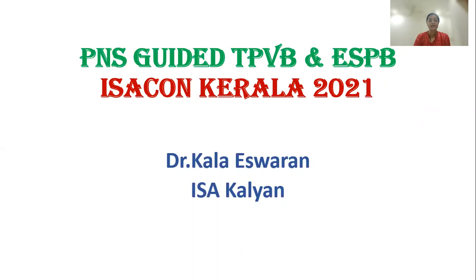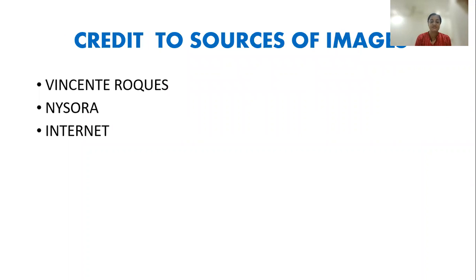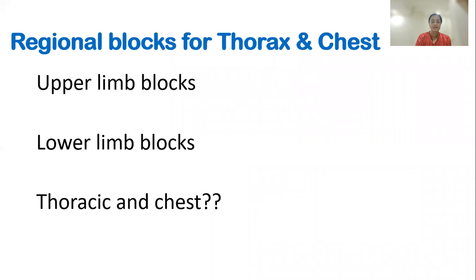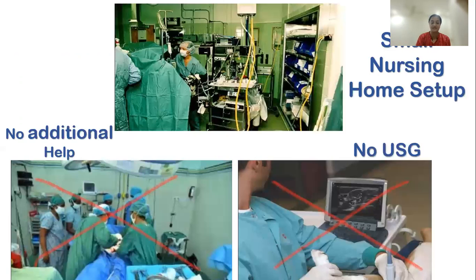Good morning, everybody. I'll be talking about PNS-guided paravertebral block versus erector spinae plane block. Greetings from ISA Kalyan. Credit to sources of images: Vincent Rougas, NYSERA, and the internet. No disclosures. We have always thought about regional blocks for upper limbs and lower limbs and for the chest. What options do we have? I come from a small nursing home setup where there is no additional help and no USG-guided blocks because of the strict PCPNDT laws of Maharashtra.